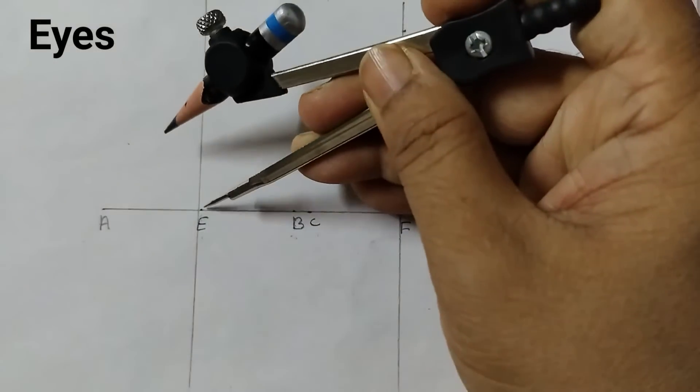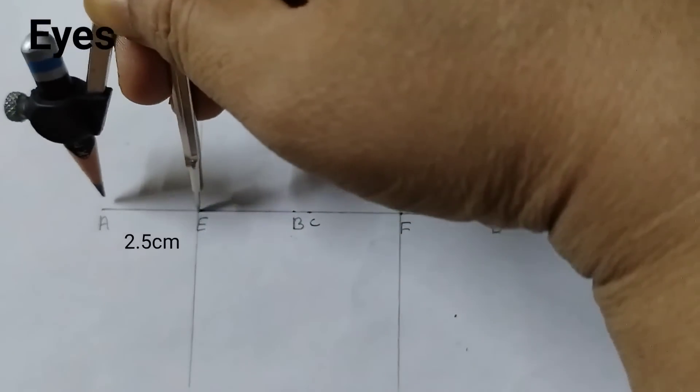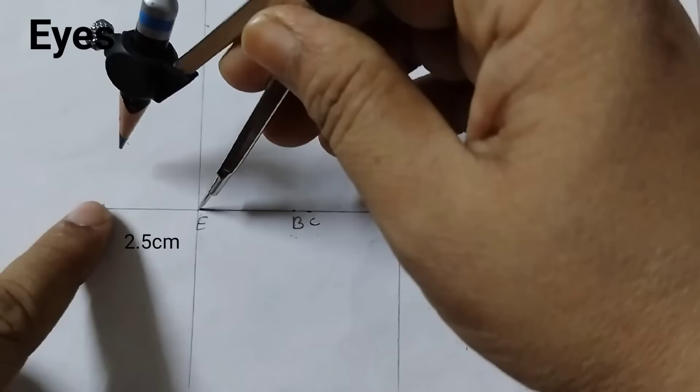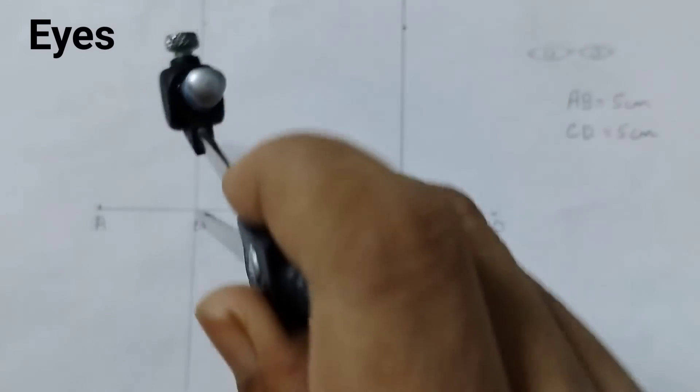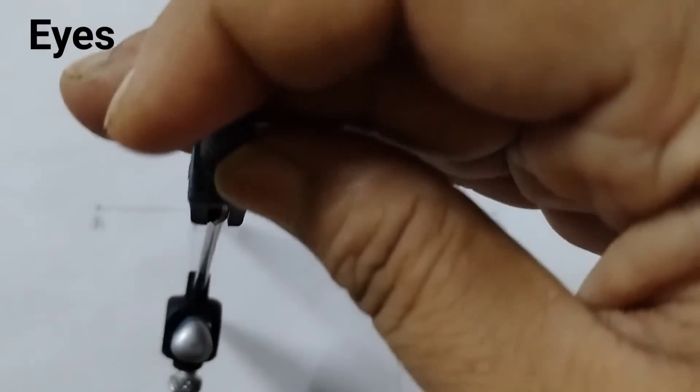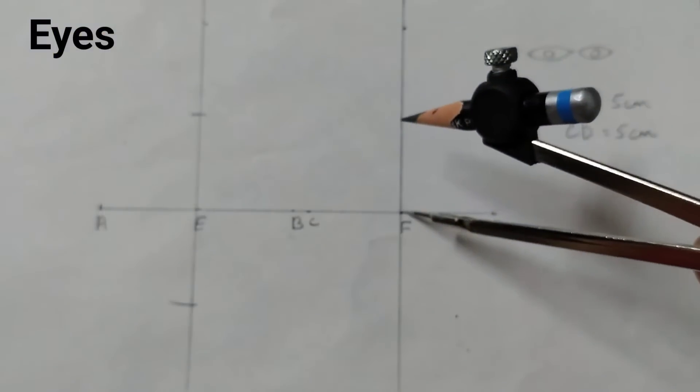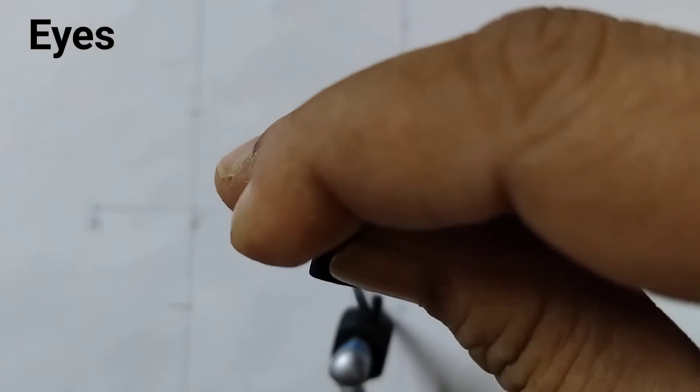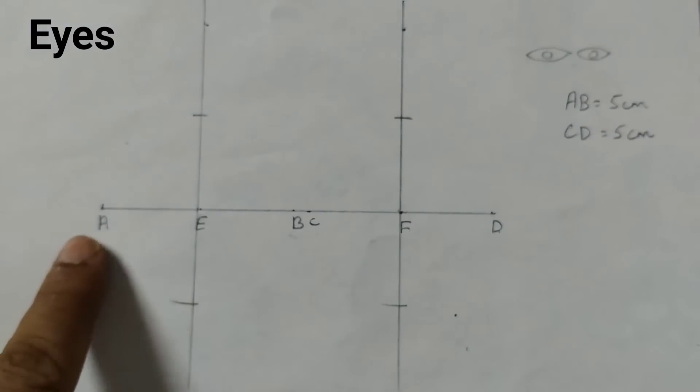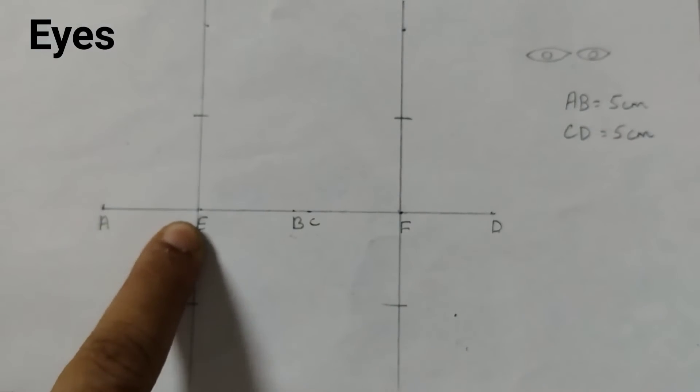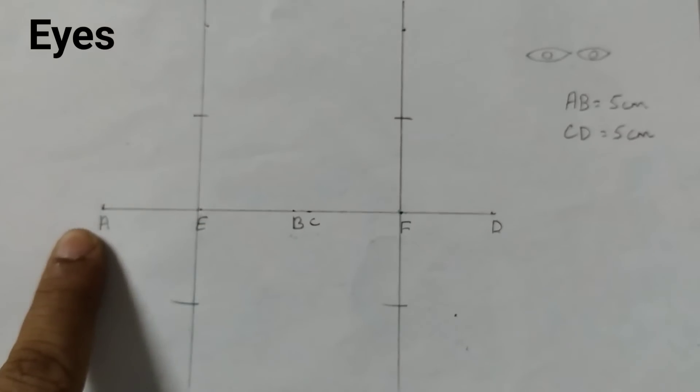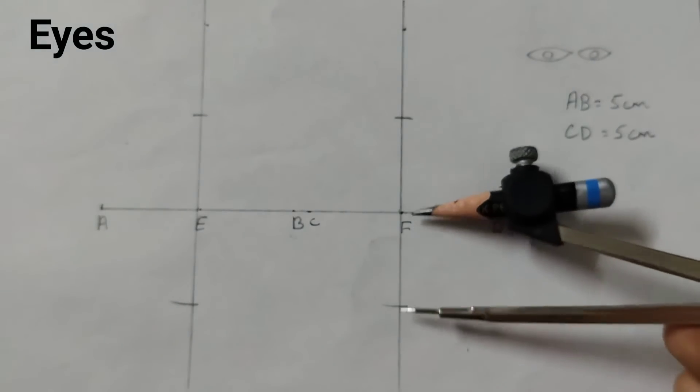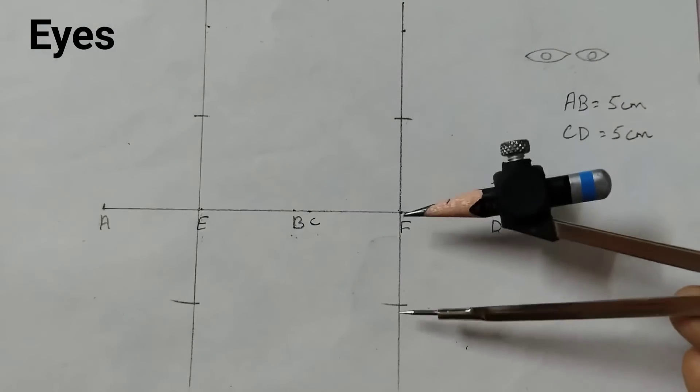Now, I will take this measurement from E to A using a compass. Drawing an arc here, one arc here, one down. Again, same measurement, one arc here and one down. I took this distance from A to E, and cut an arc here and here. Similarly, place the point at F and cut an arc here and here.